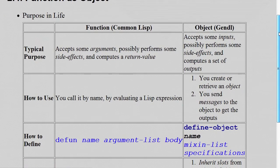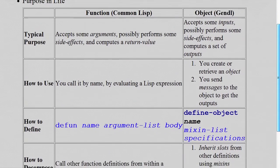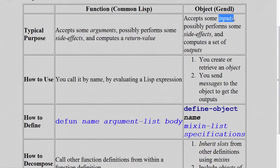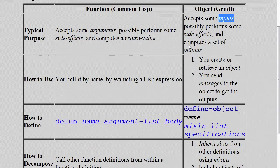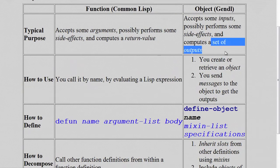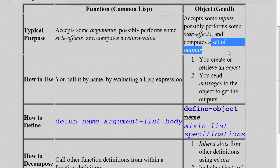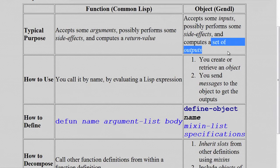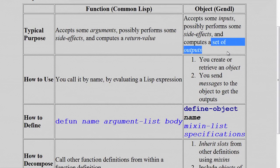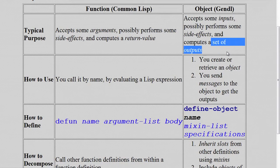For an object, it accepts inputs, possibly performs side effects, and then computes a set of outputs. So the main difference here is that an object can compute a set of outputs. Typically, a function computes just a single return value, although in Common Lisp it is possible for a function to return more than one.